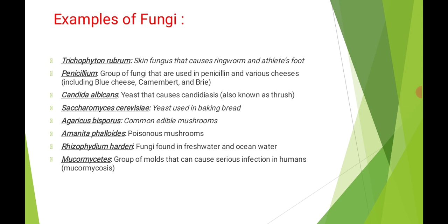The next example is Agaricus bisporus, a common edible mushroom. Amanita phalloides is a poisonous mushroom dangerous for human health. Then there is Rhizophyllum harderi, a fungus found in both fresh water and ocean water. Finally, Mucormycetes is a group of moulds that can cause serious infection in humans — after COVID treatment, many people got infected by Mucormycetes, which can also cause death.